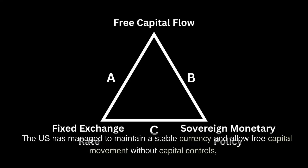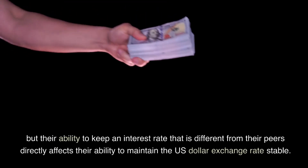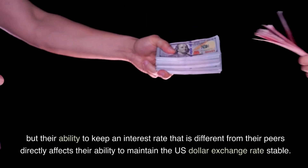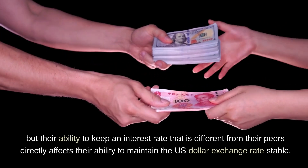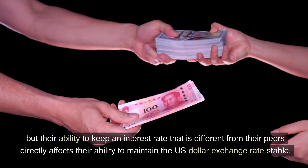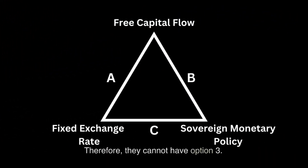The US has managed to maintain a stable currency and allow free capital movement without capital controls. But their ability to keep an interest rate that is different from their peers directly affects their ability to maintain the US dollar exchange rate stable. Therefore, they cannot have option three.